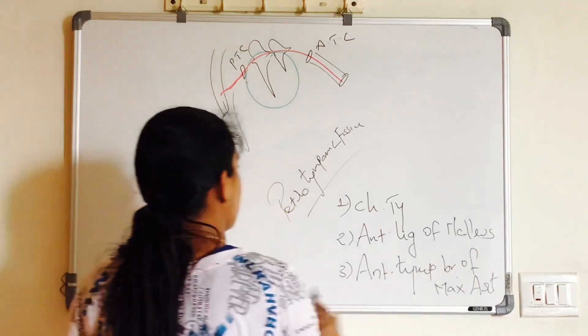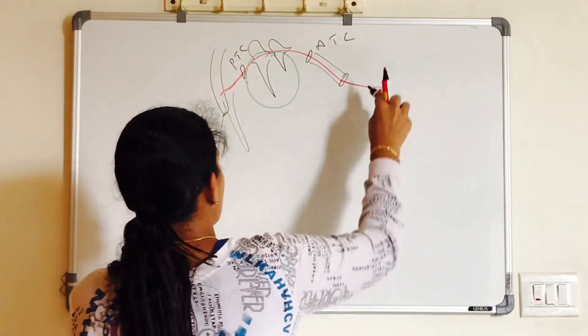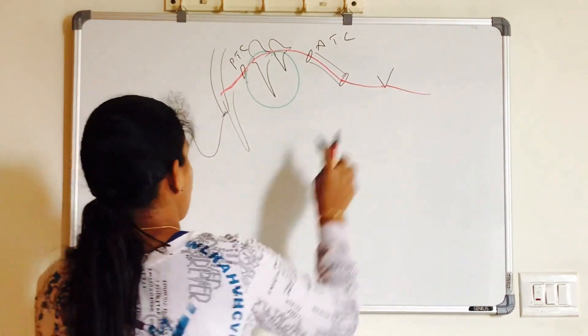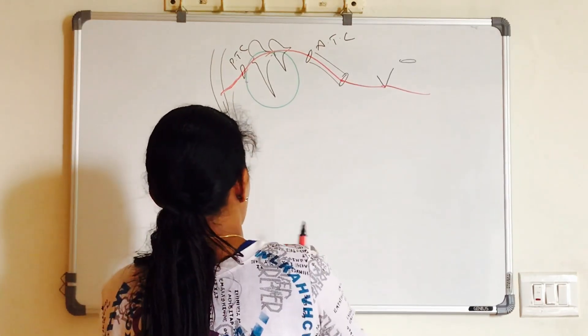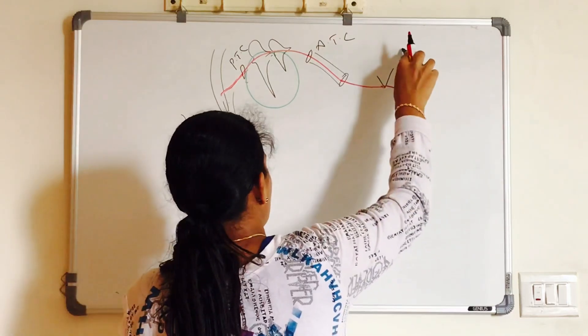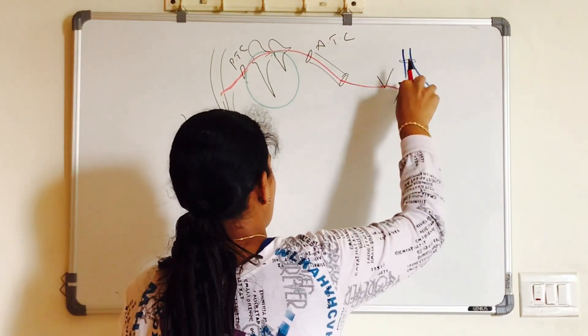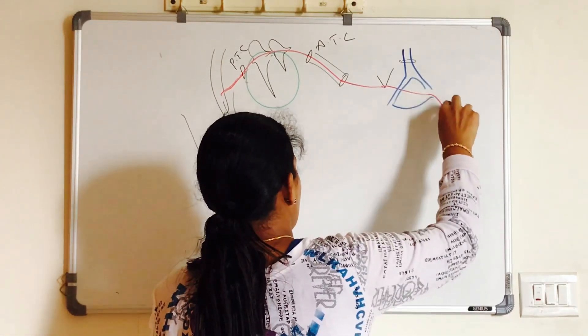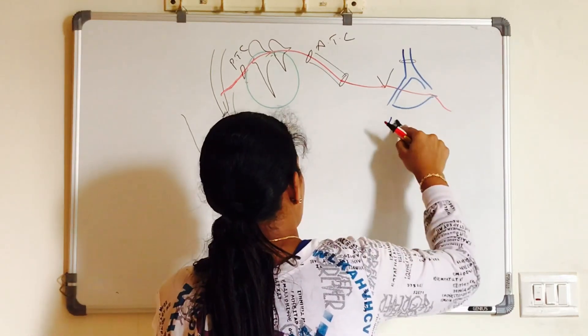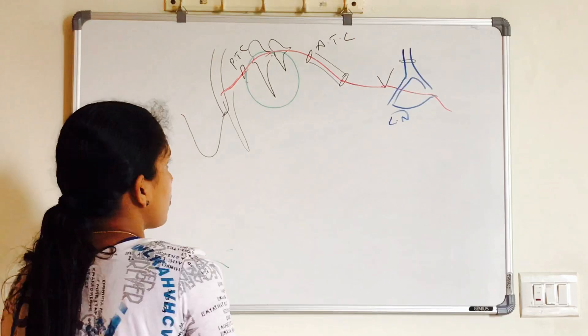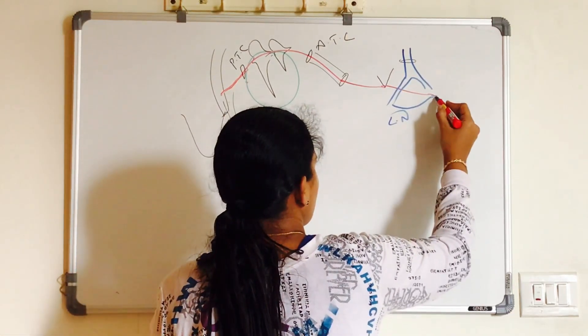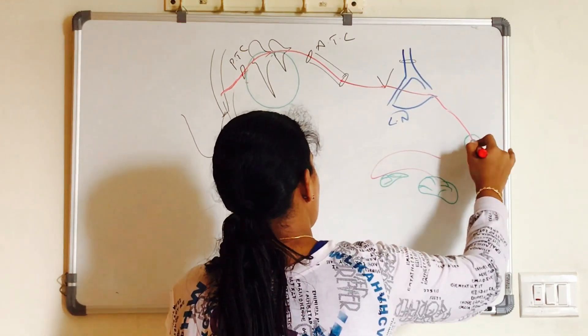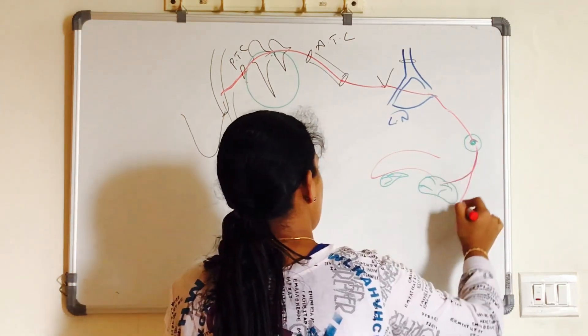Now, this chorda tympani nerve, it moves forward medial to the spine of sphenoid bone. In front of the spine of sphenoid, we have a foramen called foramen ovale. Mandibular nerve comes out of this foramen, divides into anterior and posterior branch. One of the branches from the posterior division is lingual nerve which joins with the chorda tympani and this relays in the submandibular ganglion. The postganglionic fiber supplies the submandibular and sublingual salivary glands.